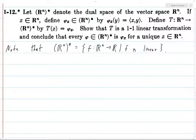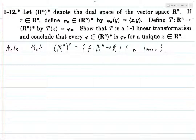So we have this map T, which goes from Rn to the collection of linear maps from Rn to R. It's defined by: you plug in a vector in Rn into T, and you get out a function called phi_x, which is defined by phi_x(y) equals the inner product of x and y.